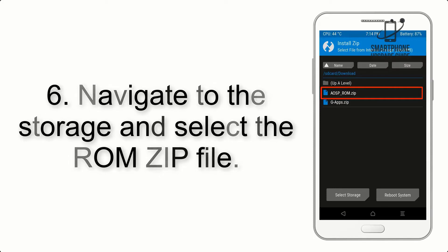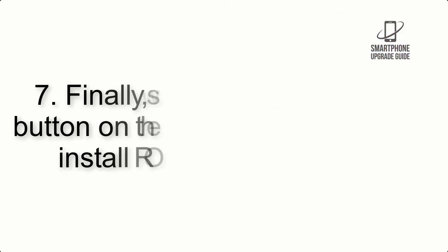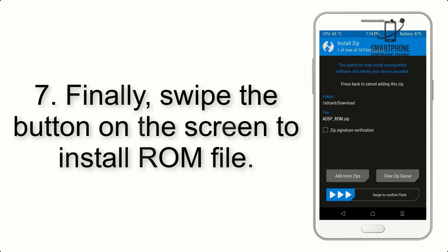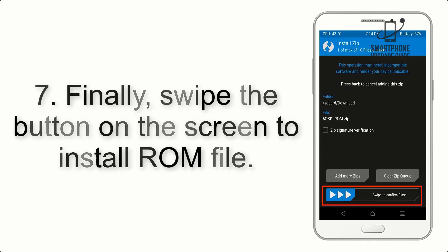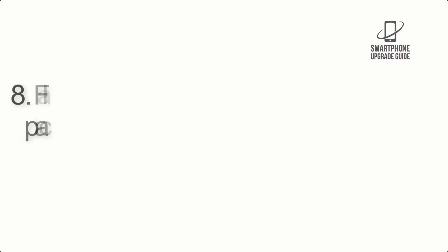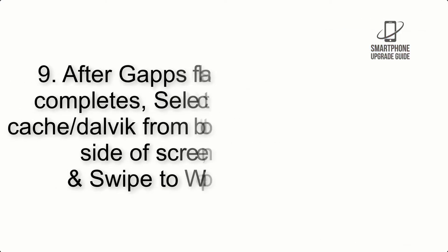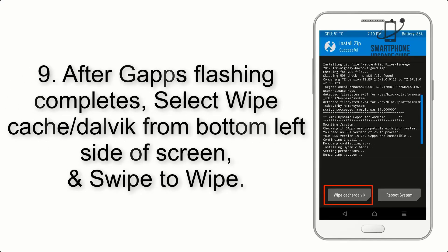Step 6: Navigate to the storage and select the ROM zip file. Step 7: Finally, swipe the button on the screen to install the ROM file. Step 8: Flash the GApps zip package in the same manner.